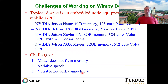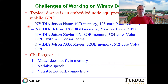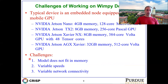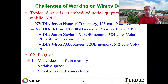Now let's consider the challenges of working on WMP devices. These are embedded or mobile devices equipped with mobile GPUs — the NVIDIA Jetson Nano and Jetson TX2 represent what's available today, and the Xaviers are becoming mainstream soon. The challenges are threefold: models often do not fit in the memory of these devices, which have only about two-tenths of a gigabyte; they have variable speeds of operation even within the same family due to natural variations and poor contention handling; and they have variable network connectivity, with wireless link quality varying fairly unpredictably.